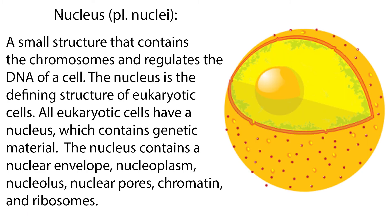Now let's talk about nuclear parts of a cell. The nucleus — or the plural, nuclei — is a small structure that contains the chromosomes and regulates the DNA of a cell. The nucleus is the defining structure of eukaryotic cells, and all eukaryotic cells have a nucleus which contains genetic material.